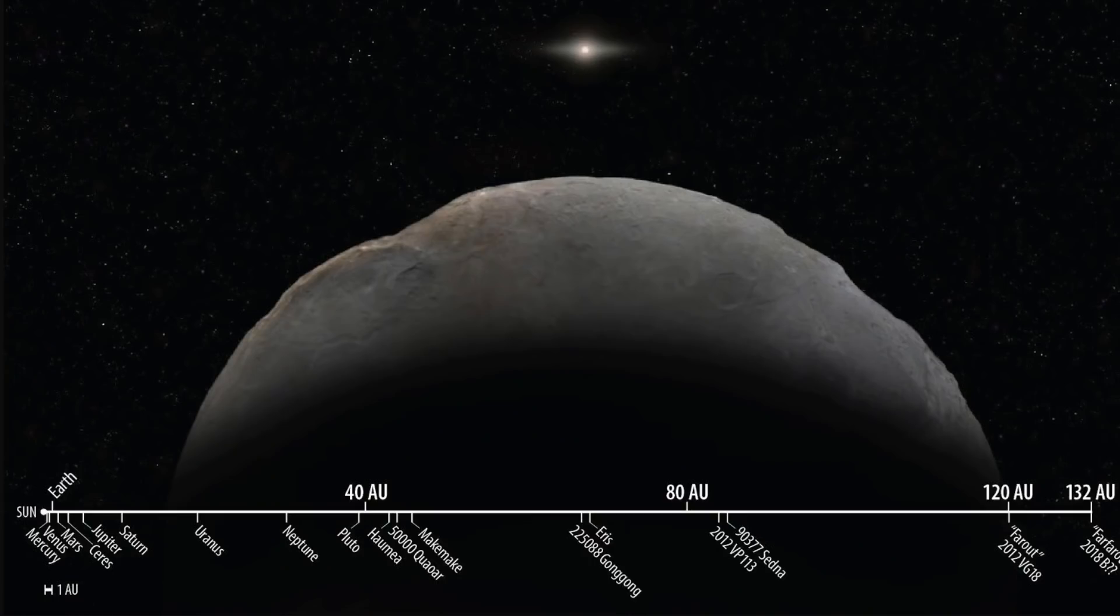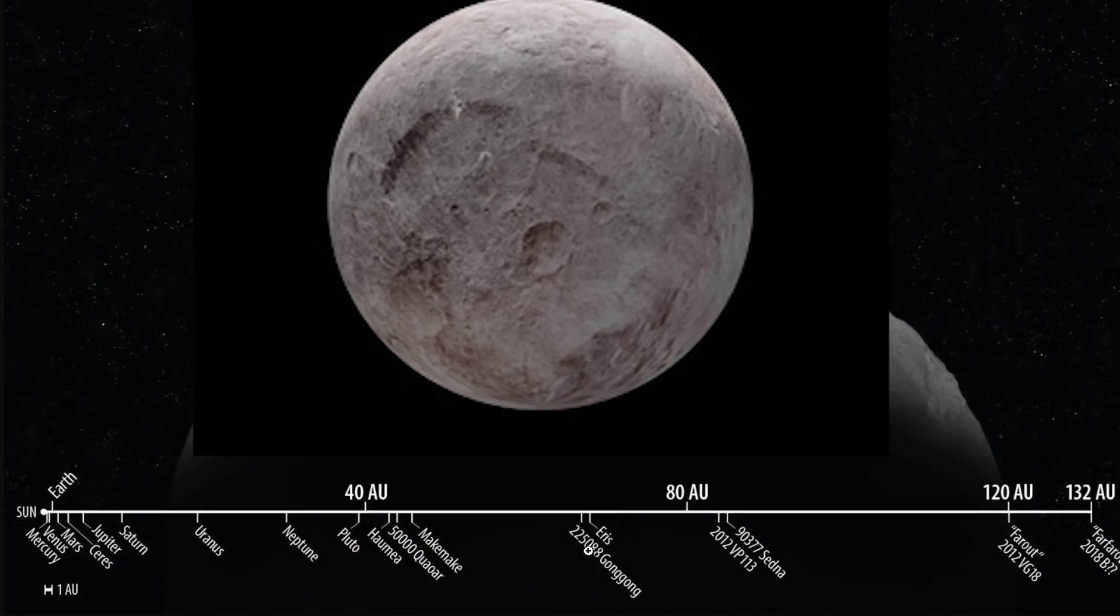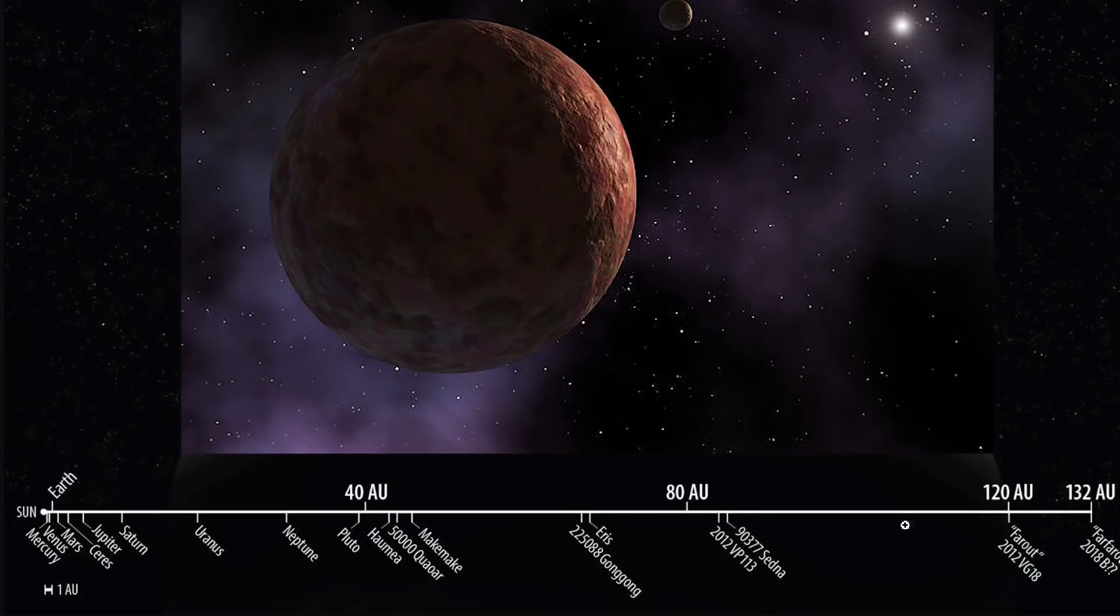And so here, for example, you can kind of visualize all of this. Here's the sun, here's Earth. This right here would be Pluto. This is Eris, the largest dwarf planet we know of. Sedna is currently right here.